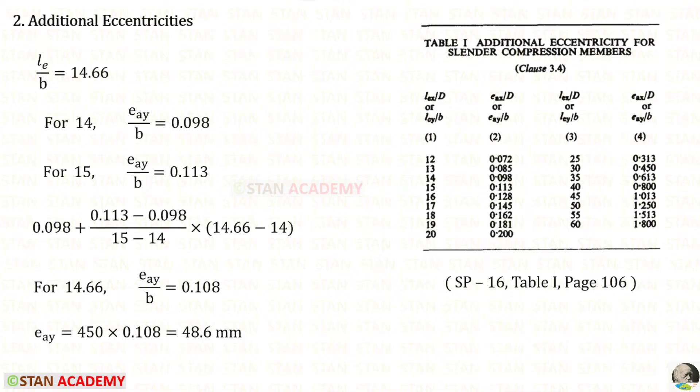Now, let us take LE upon B. We have got 14.66. It comes between 14 and 15. So, we need to take these two values. For 14.66, we will get 0.108. We know the value of B, 450. For EAY, we will get 48.6 mm.